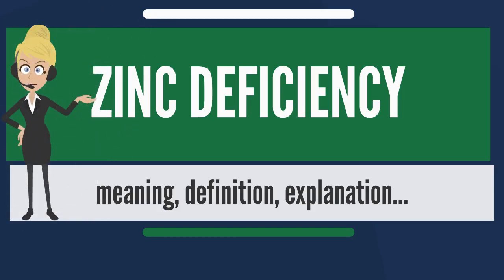Zinc deficiency can occur in soil, plants, and animals. In animals, including humans, it is defined either qualitatively as insufficient zinc to meet the needs of the body, thereby causing clinical manifestations, or quantitatively as a serum zinc level below the normal range.